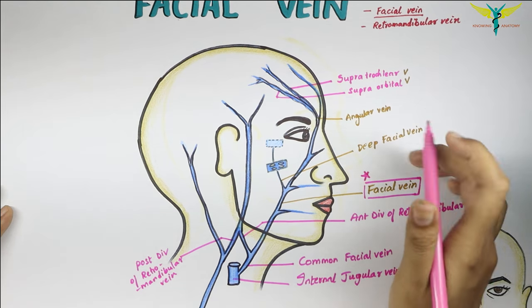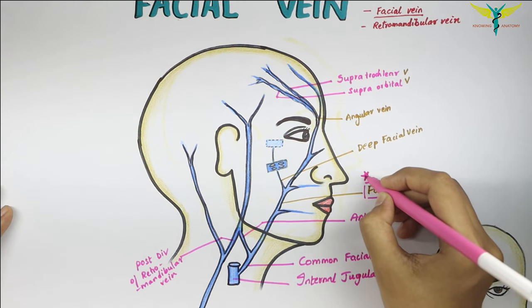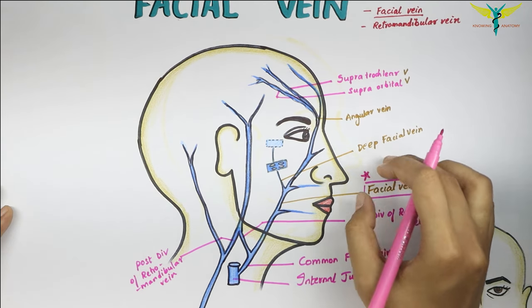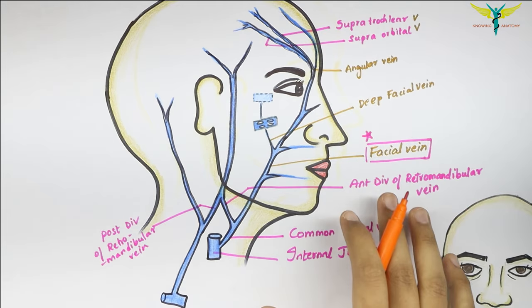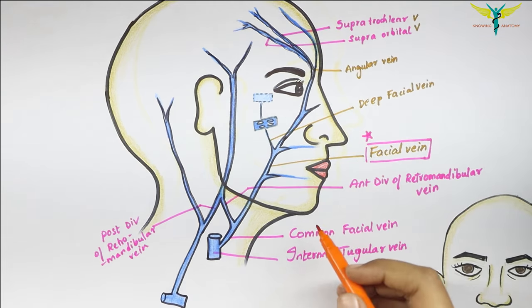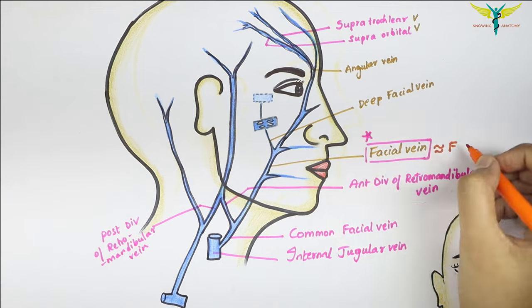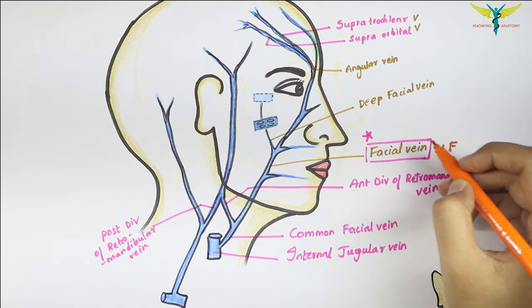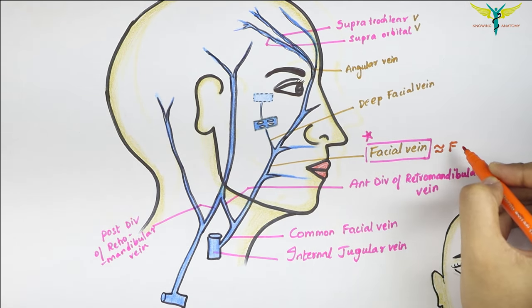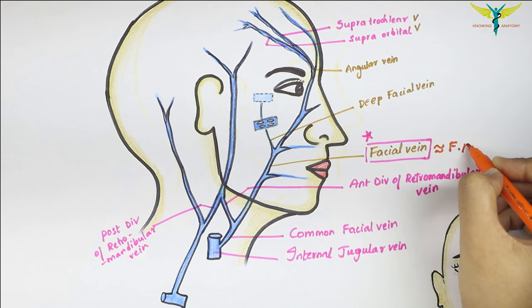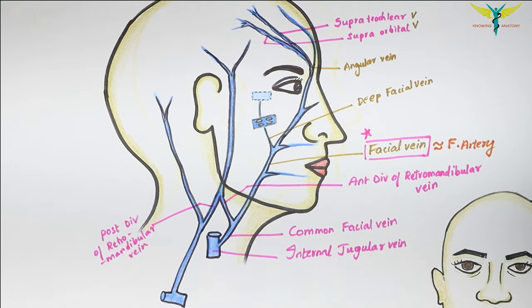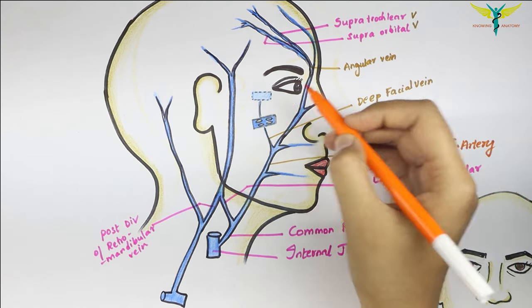The tributaries of the facial vein correspond to the branches of the facial artery.